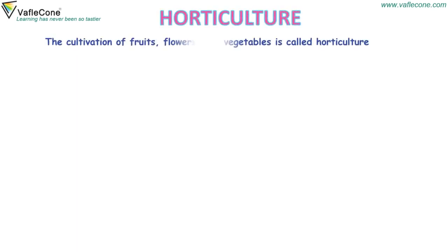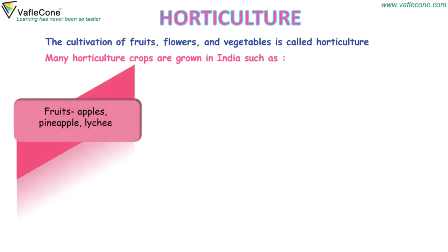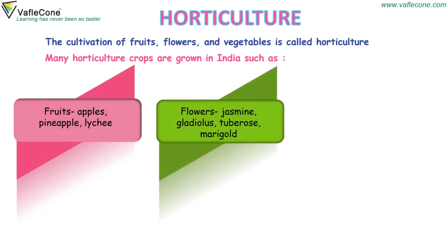Horticulture: the cultivation of fruits, flowers and vegetables is called horticulture. Many horticulture crops are grown in India, such as fruits like apples, pineapple, lychee, and flowers like jasmine, gladiolus, tuberose and marigold.